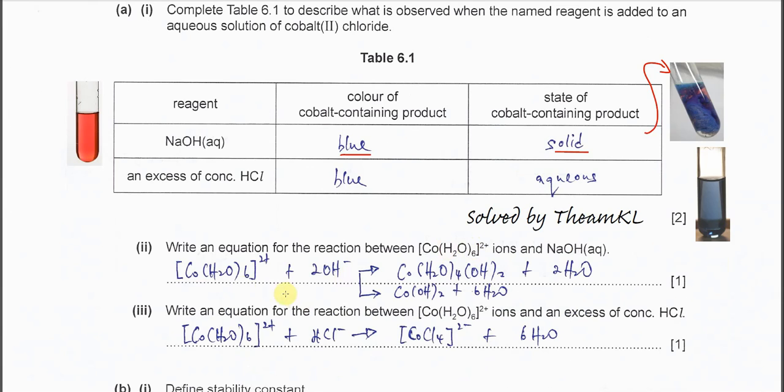Follow the equation here in part 2: the hexa aqua cobalt-2 ion with 2 hydroxide will form this precipitate, cobalt with 4 H2O and 2 hydroxide. You have to balance the equation plus 2 H2O, so 2 H2O has been exchanged.